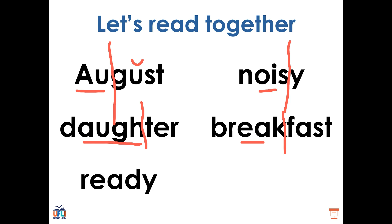I also see an EA in this word. I'll split it between its syllables in the same place as we split NOISY. So we have RED. And the Y at the end says E. RED-E. READY. Well done.